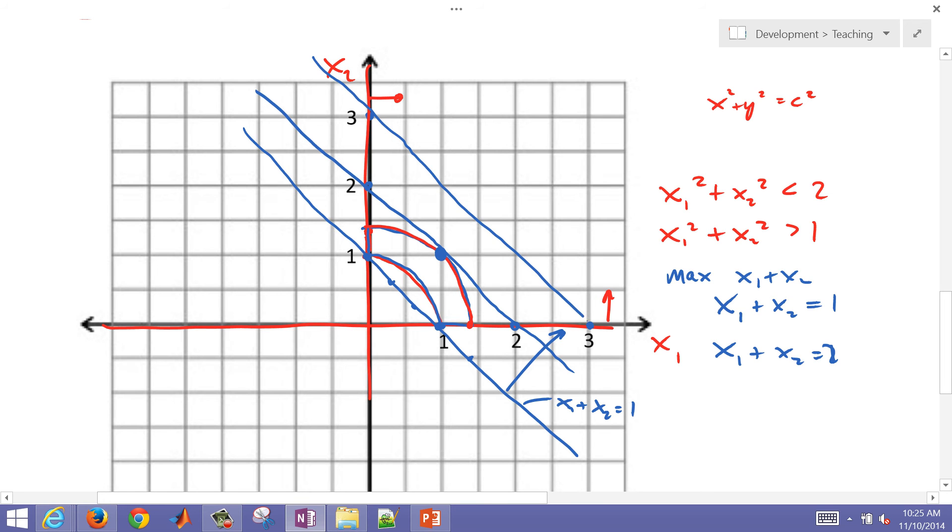Let's just test x1 plus x2 equals 3. If I come up even further, that's going to be x1 plus x2 equals 3. But I don't have a point along here that lies within that feasible region. So no potential solutions of x1 plus x2 equals 3. So let's just verify this with a solver now.